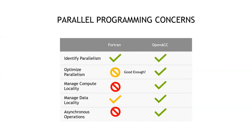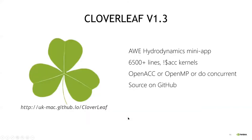Summarizing the five concerns: OpenACC has addressed all of them. Fortran largely handles expressing data parallelism. Optimizing parallelism in Fortran may already be good enough or may have room for improvement. Managing data locality may be good enough given unified memory trends. Managing compute locality and asynchronous operations are potentially problems still to be solved in standard Fortran. I want to use the last few minutes to show a real-world example and leave a challenge for the audience.